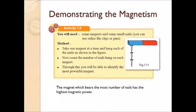Demonstrating the magnetism. When we do this activity, you can observe the number of nails hung on magnets differ according to the power of the magnet. Here you can see there are three nails hung on the magnet. We can conclude that the magnet which bears the most number of nails has the highest magnetic power.